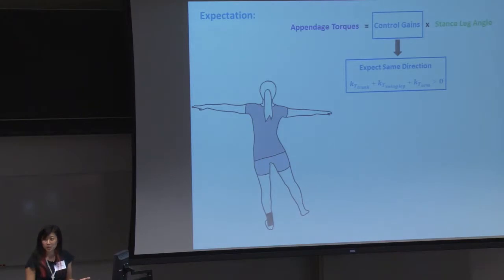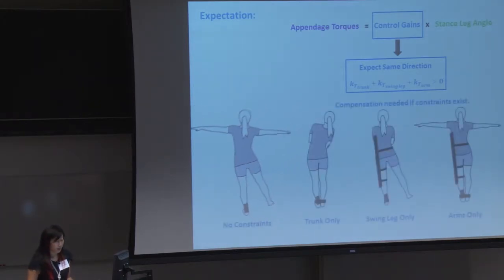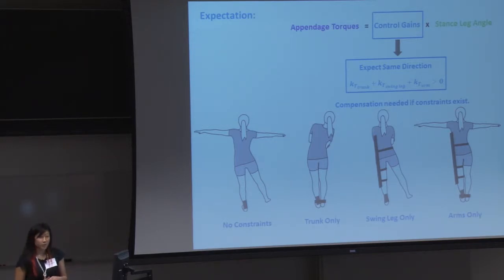We also want to know what happens when we constrain appendages. And so we have four other conditions. We have a no constraint, which is what I showed before. We have trunk only, swing leg only, and arms only, which you can only use those appendages. And for the ones where we restrict the trunk, we are basically tying the trunk to the stance leg. And we're going to measure limb variance through the root mean square as a measure of how you compensate.